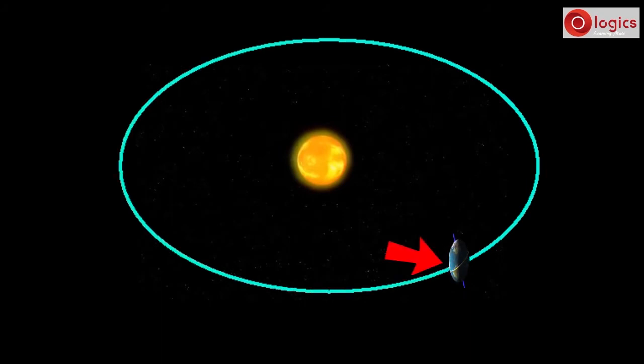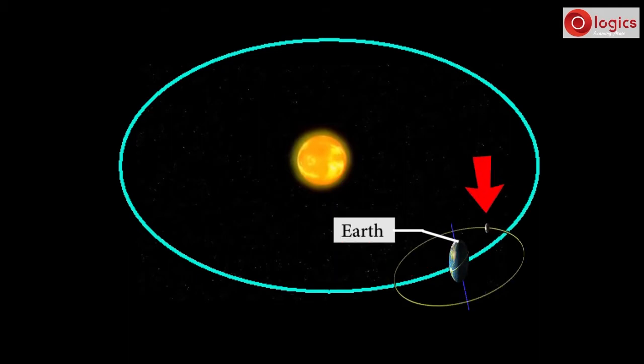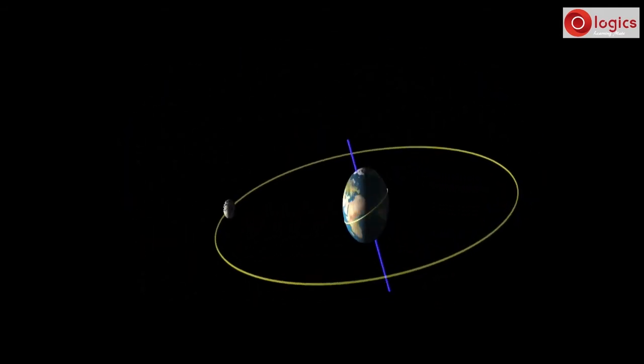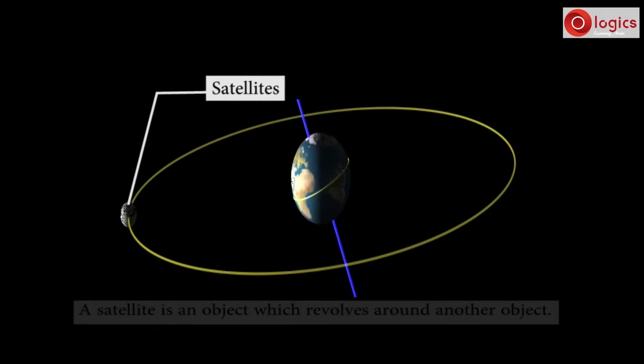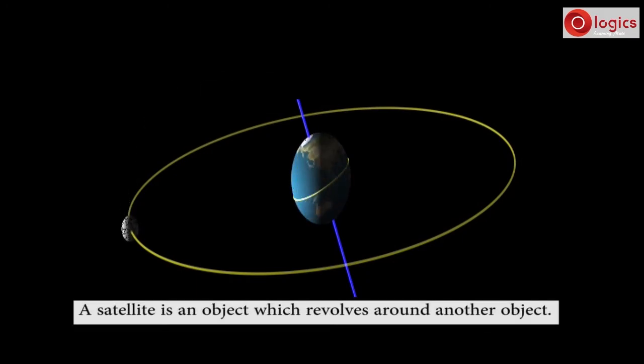This is an object, let us say earth, and this is another object which revolves around this object. This object is called satellite. A satellite is an object which revolves around another object.